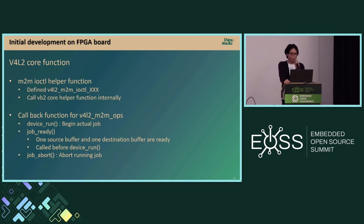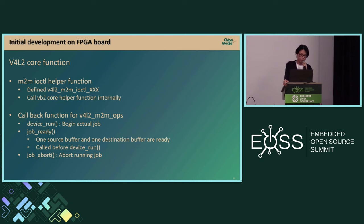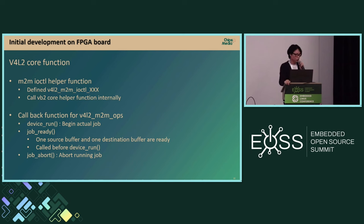This is the M2M helper function, named with the V4L2_M2M_IOCTL prefix, which calls the V4L2 core helper function internally. If you want to use both the video device interface and memory-to-memory interface together, just use the M2M helper function. The M2M helper has specific callback functions: device_run, where the actual job begins; job_ready, called when one source buffer and one destination buffer are ready and before device_run, so you can check if your hardware is ready; and job_abort, to abort a running job before it finishes.